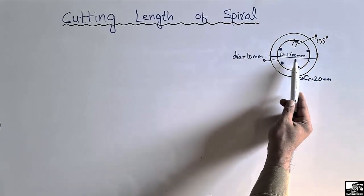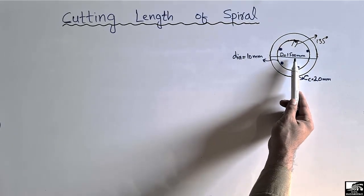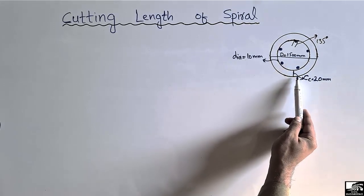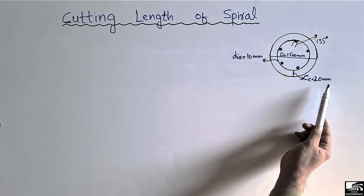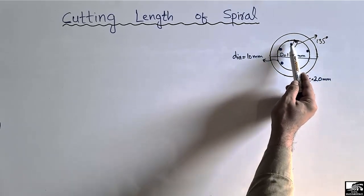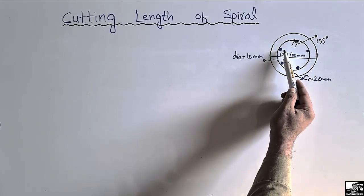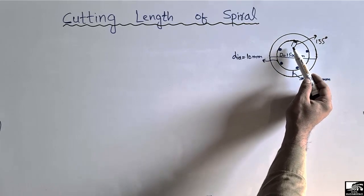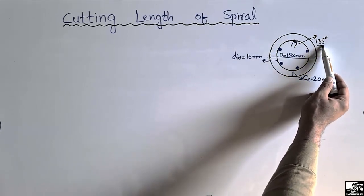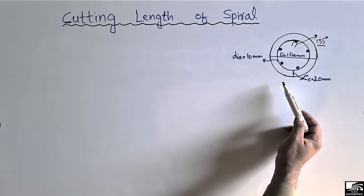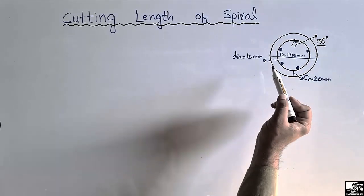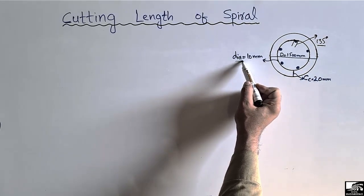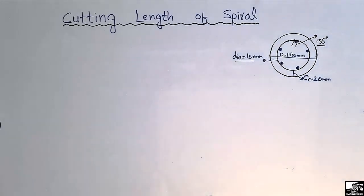Let's suppose this is a column with a diameter of 1.5 meters or 1500 millimeters, with a concrete cover of 20 millimeters on each side. There is a spiral used along the longitudinal reinforcement for resisting lateral load and for confinement of the concrete. This spiral has a 135-degree bend, which is mostly used for resisting seismic or earthquake load. The diameter of the spiral bar is given as 10 millimeters.